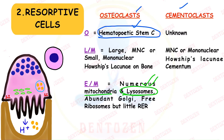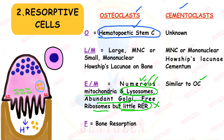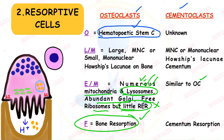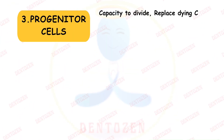Under electron microscopy, osteoclasts show numerous mitochondria and lysosomes containing enzymes that assist in degradation, abundant Golgi, free ribosomes, but little rough endoplasmic reticulum — confirming they degrade rather than synthesize protein. Cementoclasts are similar to osteoclasts under the electron microscope. Osteoclasts function in bone resorption; cementoclasts function in cementum resorption.